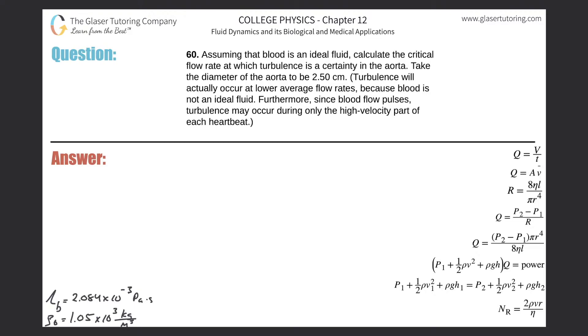Number 60: Assuming that blood is an ideal fluid, calculate the critical flow rate at which turbulence is a certainty in the aorta. Take the diameter of the aorta to be 2.5 centimeters. Turbulence will actually occur at lower rates, but we'll work with this.